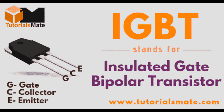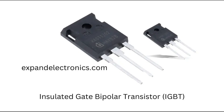On-state conduction mode: When a positive voltage is applied to the gate terminal relative to the emitter, an electric field is generated. This creates a channel for electrons in the P-well region, similar to a MOSFET. With the channel formed, electrons move from the emitter N-plus region into the P-well, and simultaneously holes are injected from the P-plus substrate into the N-drift region. The holes and electrons form a large number of charge carriers, leading to significant current flow from the collector to the emitter, enabling the device to pass large currents with a relatively low on-state voltage drop.